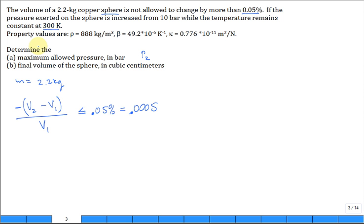We're given some properties for the copper. We're given the mass density, but we need kappa, the isothermal compressibility. What was kappa defined as? It's minus 1 over the specific volume times the rate of change of specific volume with respect to pressure holding temperature constant.